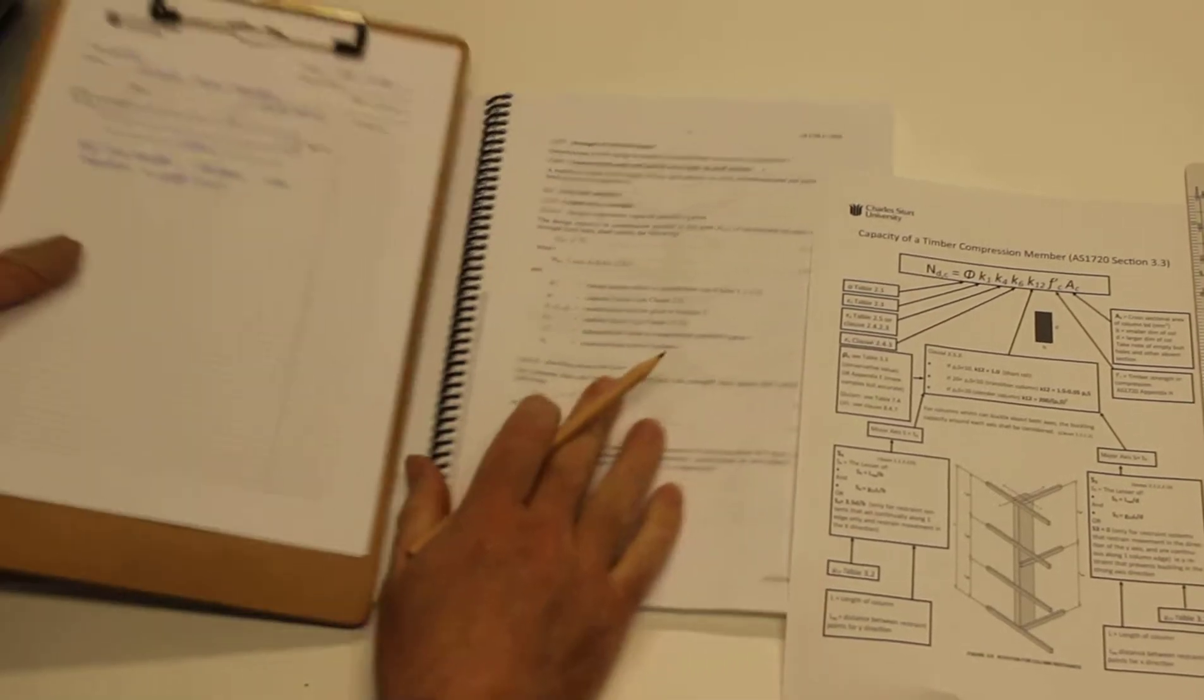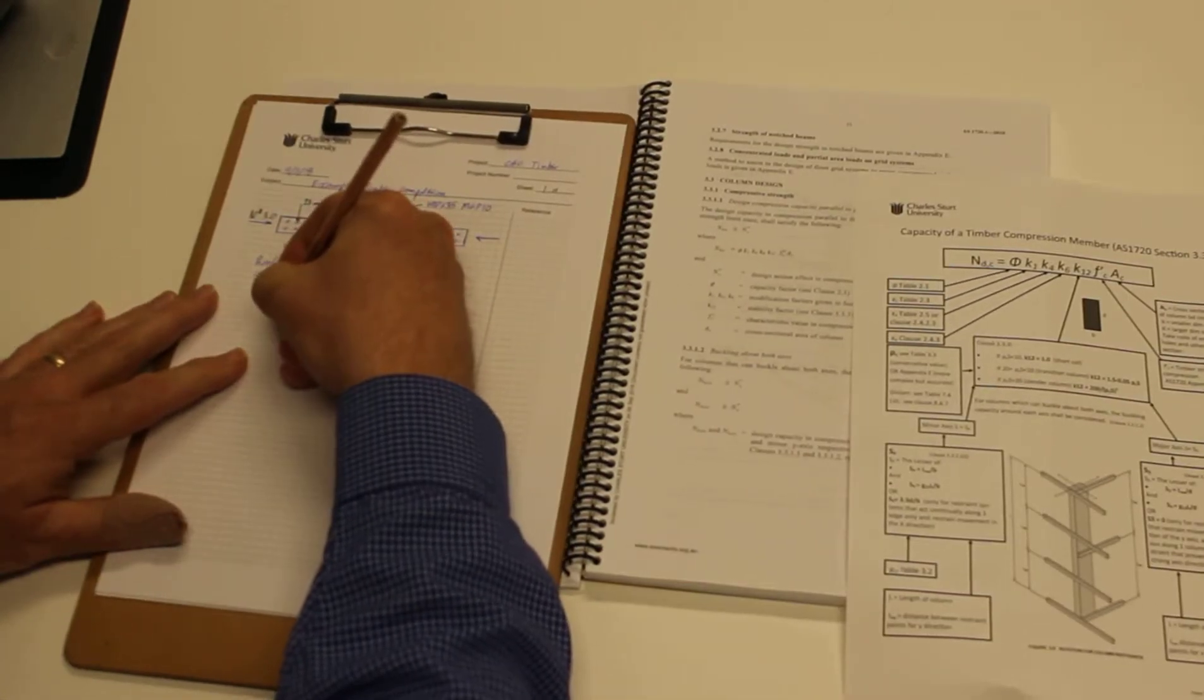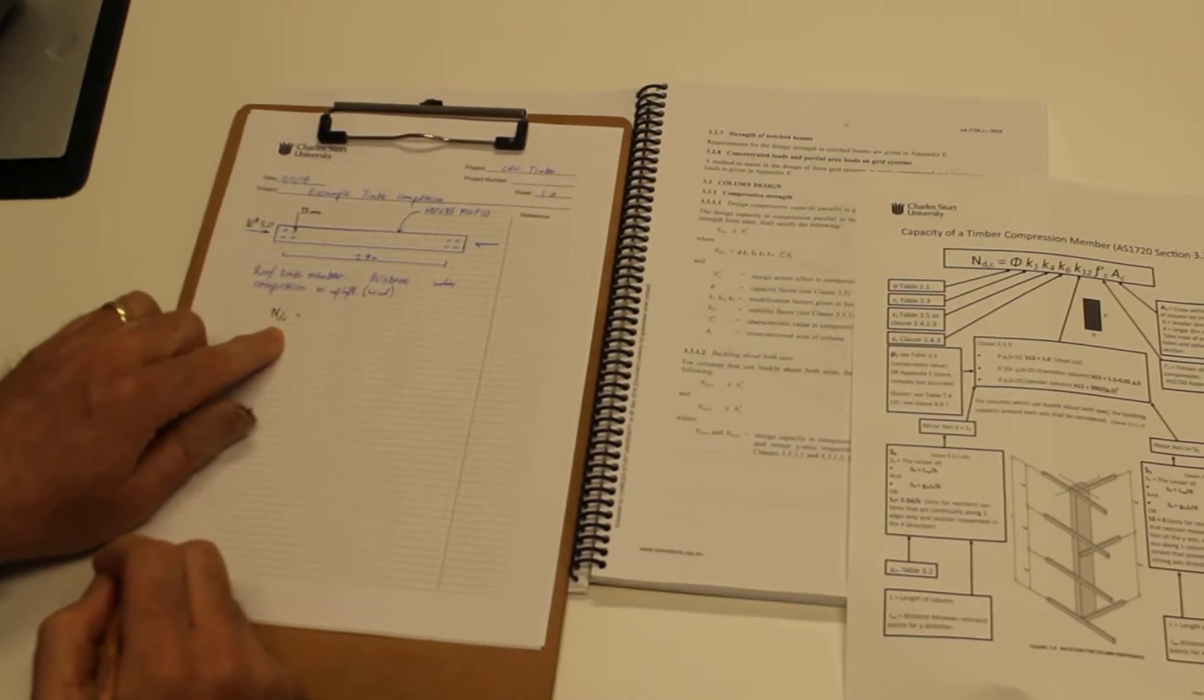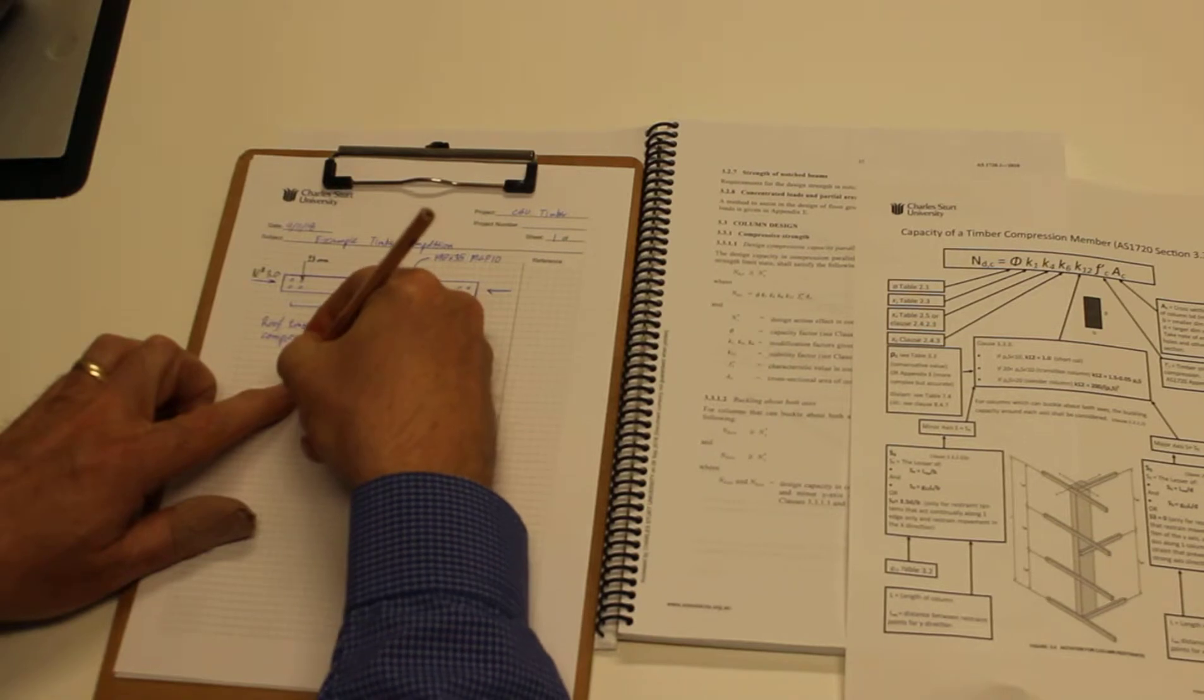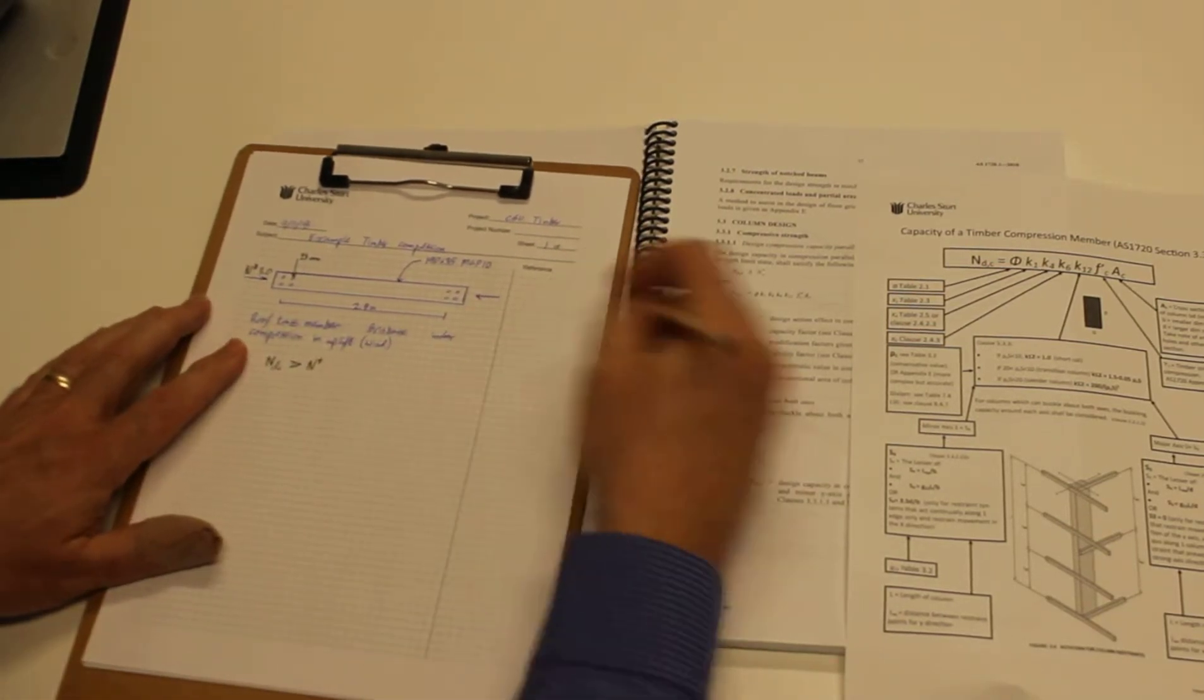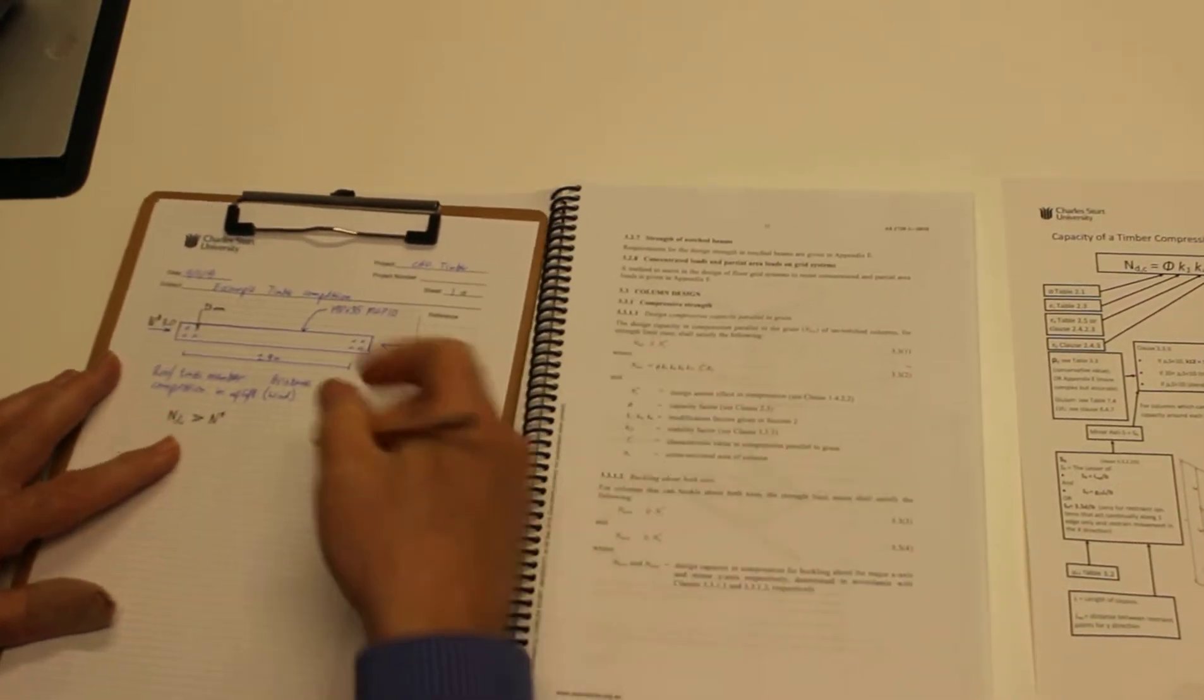So we'll go to our equation. First thing we have to do is say that the NDC, which is the member capacity in compression, must be greater than N*, that's the load.